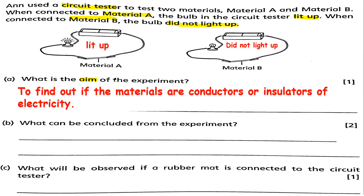If the bulb lights up, the material is a conductor. If the bulb does not light up, the material is an insulator of electricity.